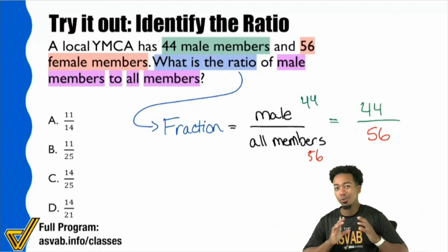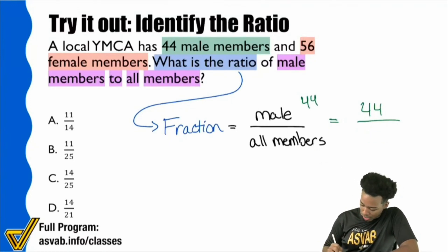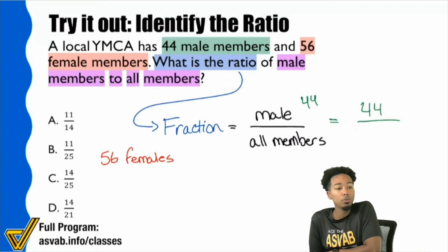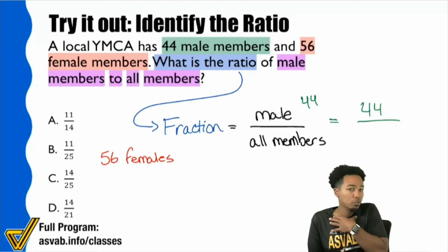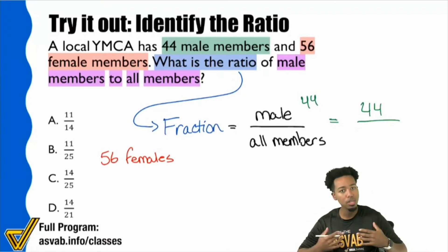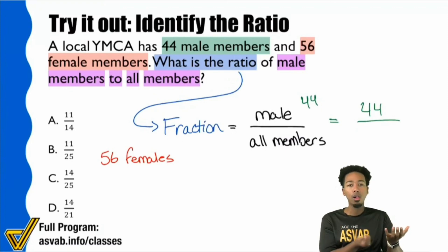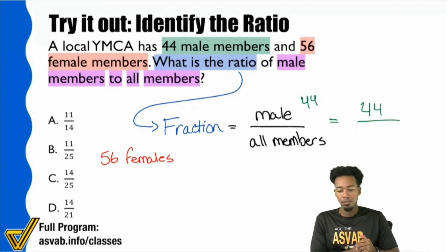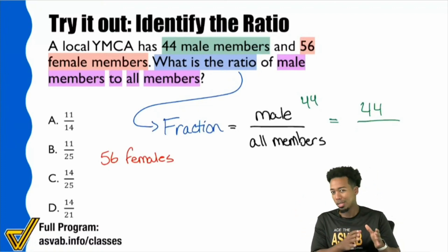That is not how math works. Math is a very logical process, and if you can think about it logically — step by step — then you can guarantee that you're correct. In this case, 56 represents females, so it would not fit under all members. This is where common sense comes in. Take what the problem is giving you and just read it how it is. If you're looking for all members and you have males and females, what can you safely assume that all means?